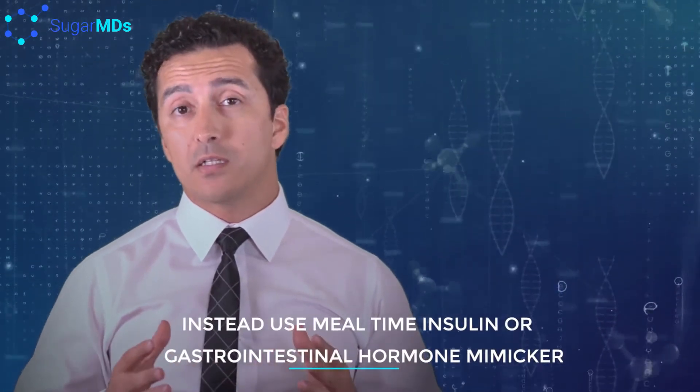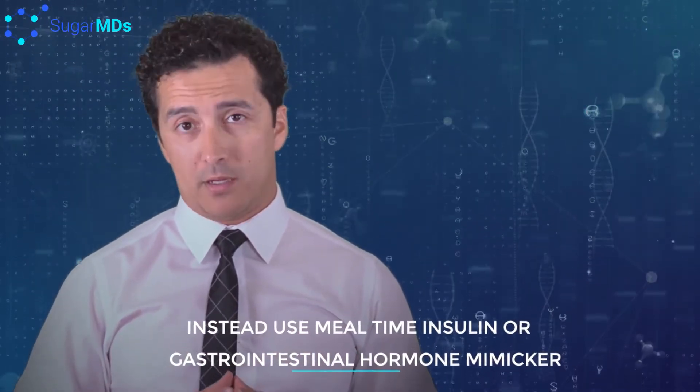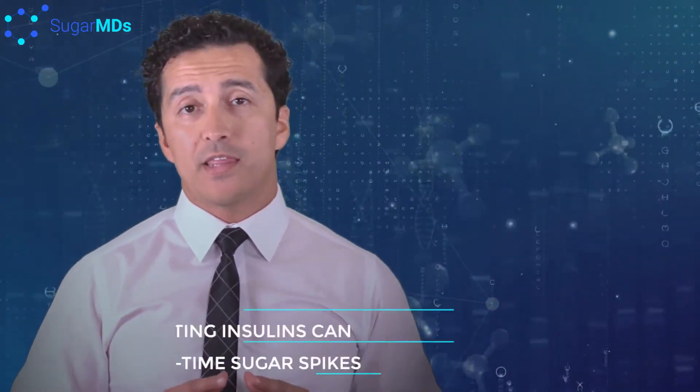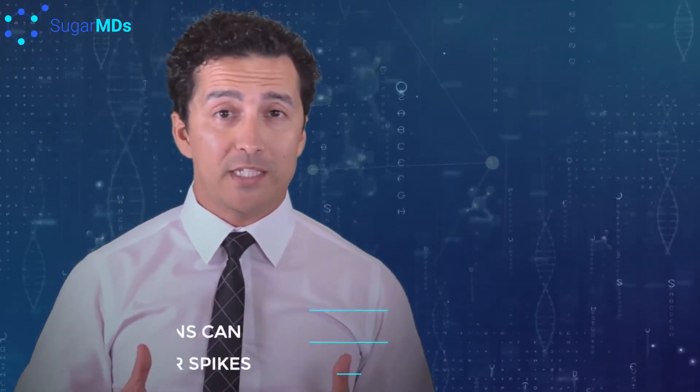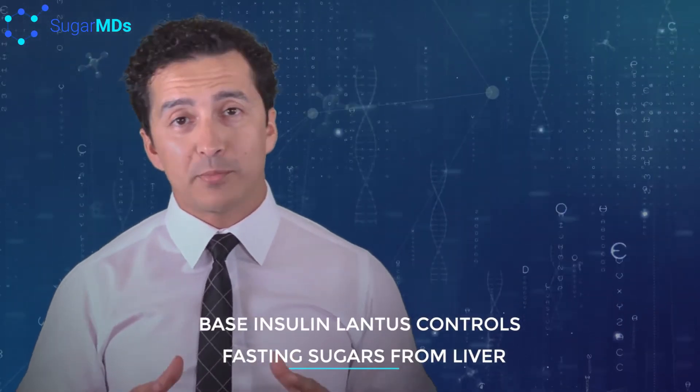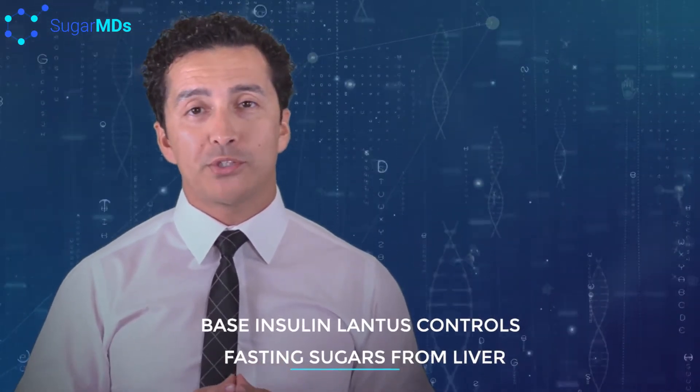What is the solution for this? The solution is easy. You can use incretin hormones. There are certain medications that are designed to mimic the action of gastrointestinal hormones that lead to insulin production when you eat. If that's not appropriate or that's not possible, you can use a mealtime insulin which is very fast-acting, and that fast-acting insulin will prevent the blood sugar spikes when you eat, and the Lantus will help you control fasting blood sugars by controlling the blood sugar output from your liver.